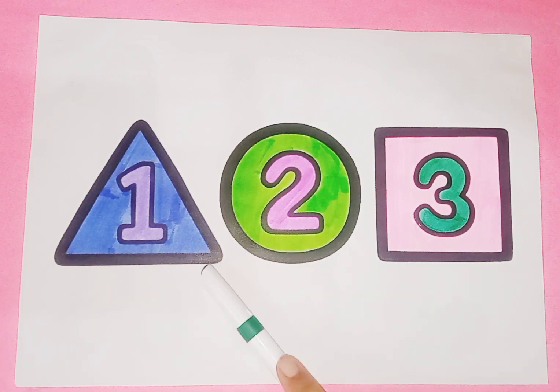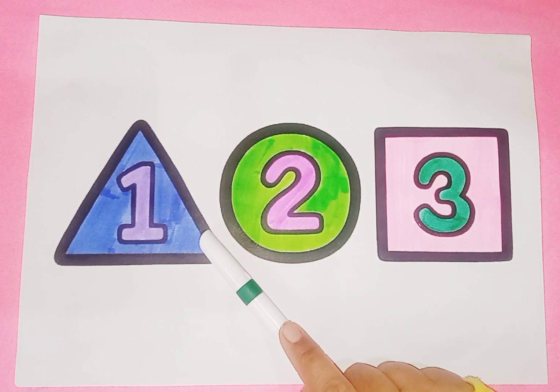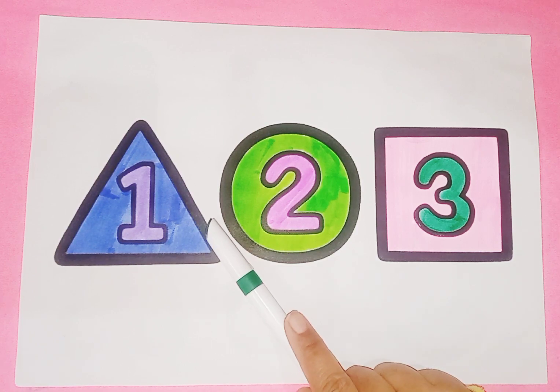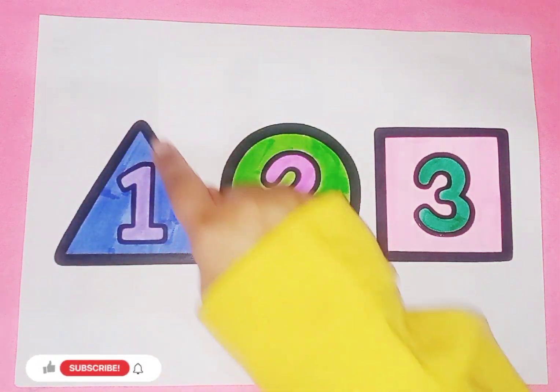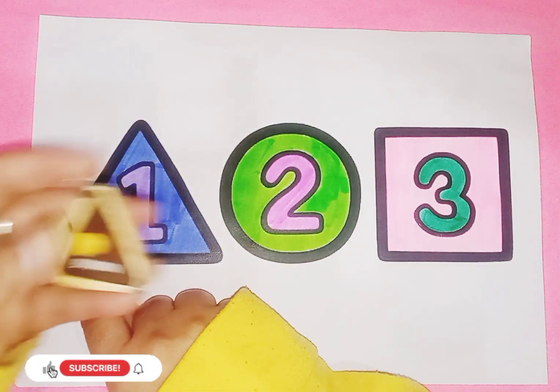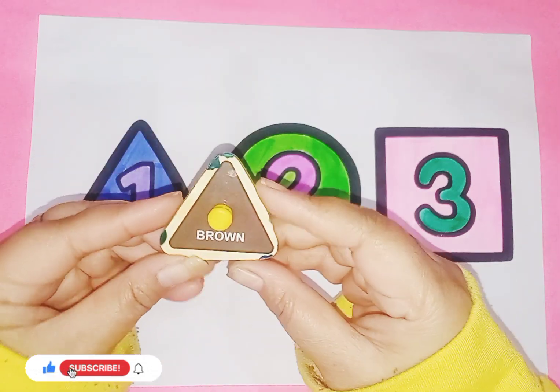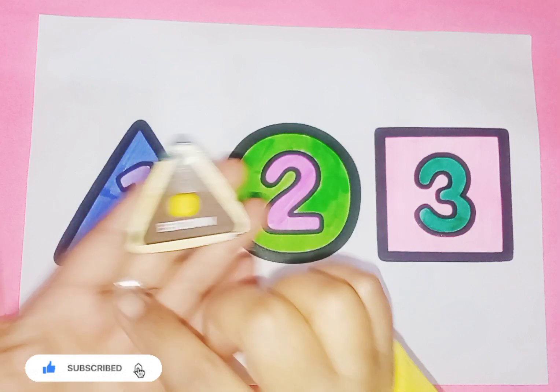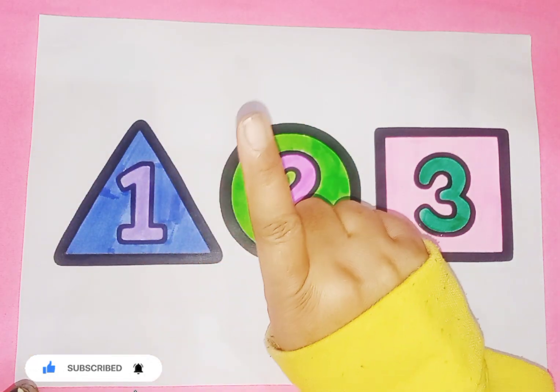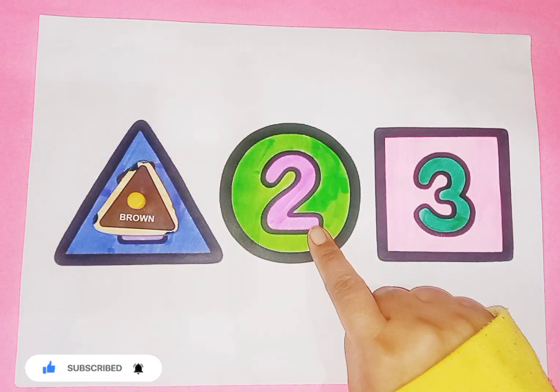So kids, today we learn some numbers and shapes. Let's revise again. This is triangle. Which shape is this? Triangle. Triangle is like this. This is triangle and triangle have three sides. Number is one, O-N-E, one.